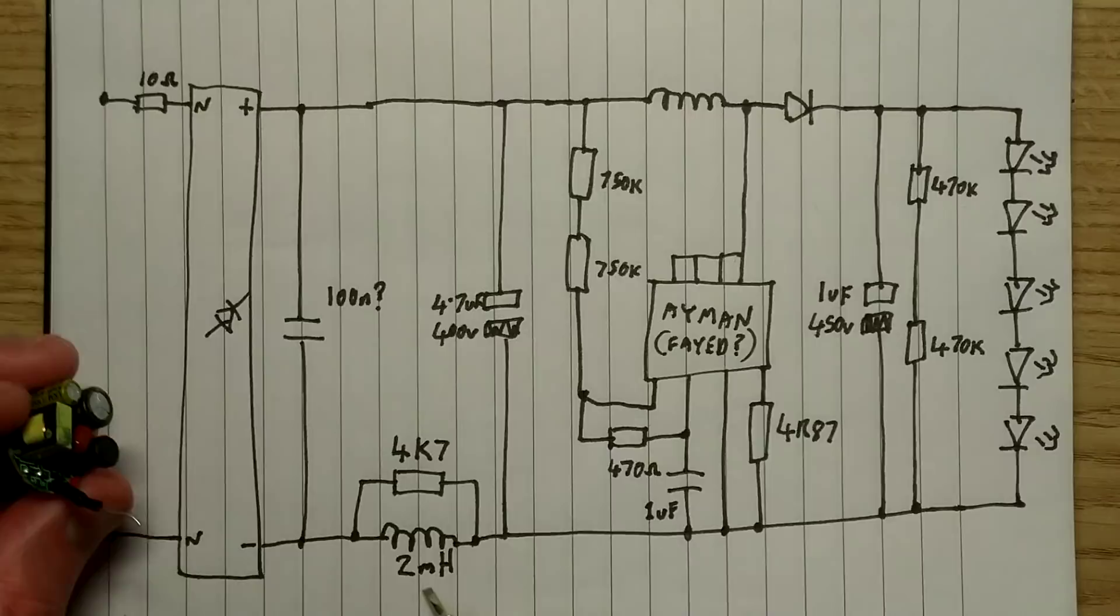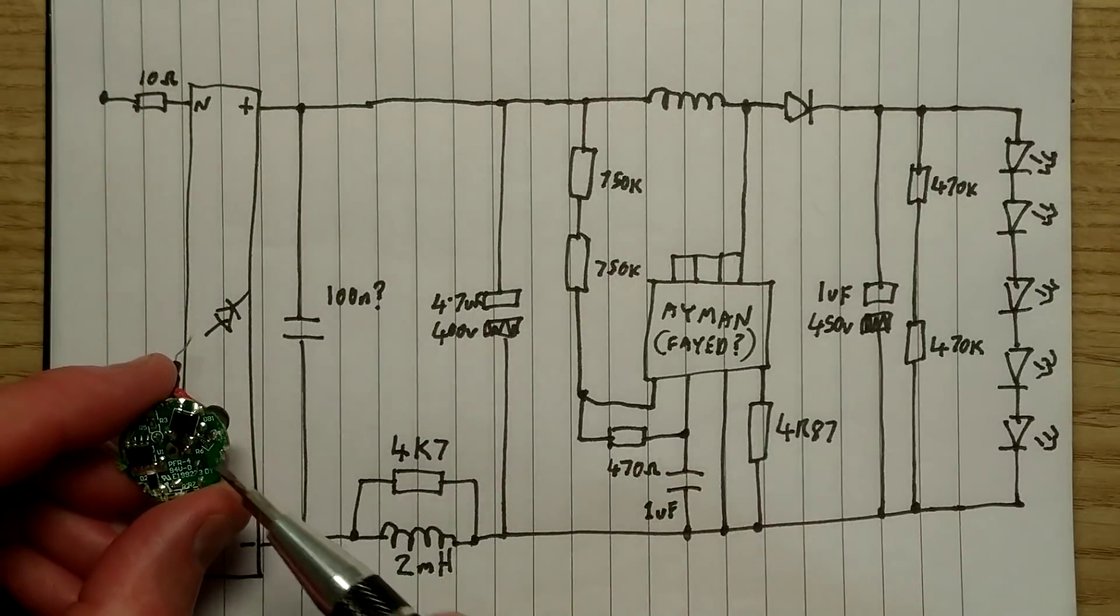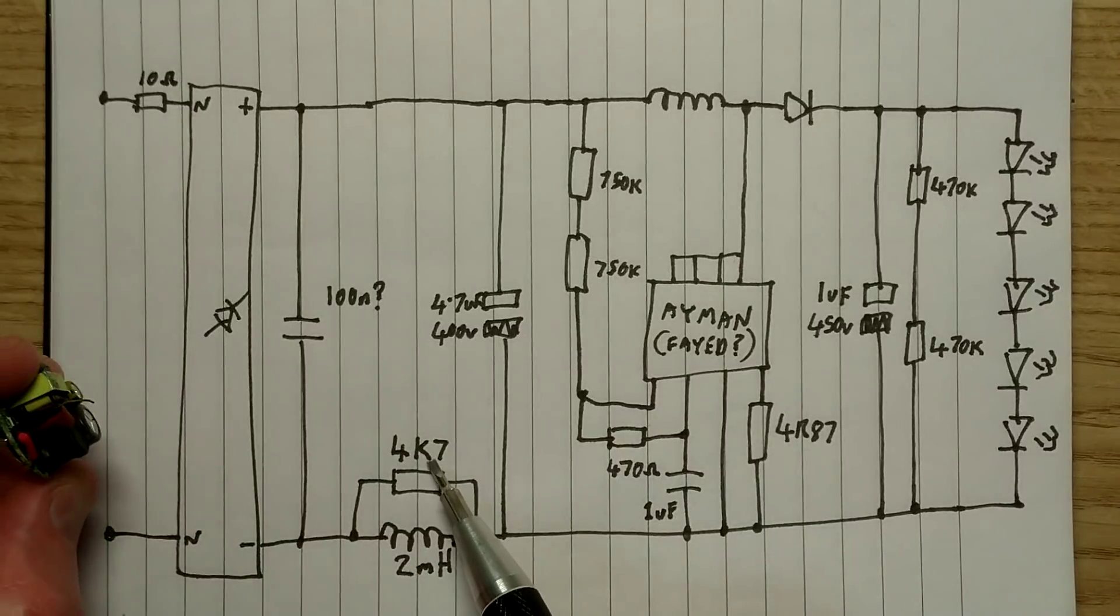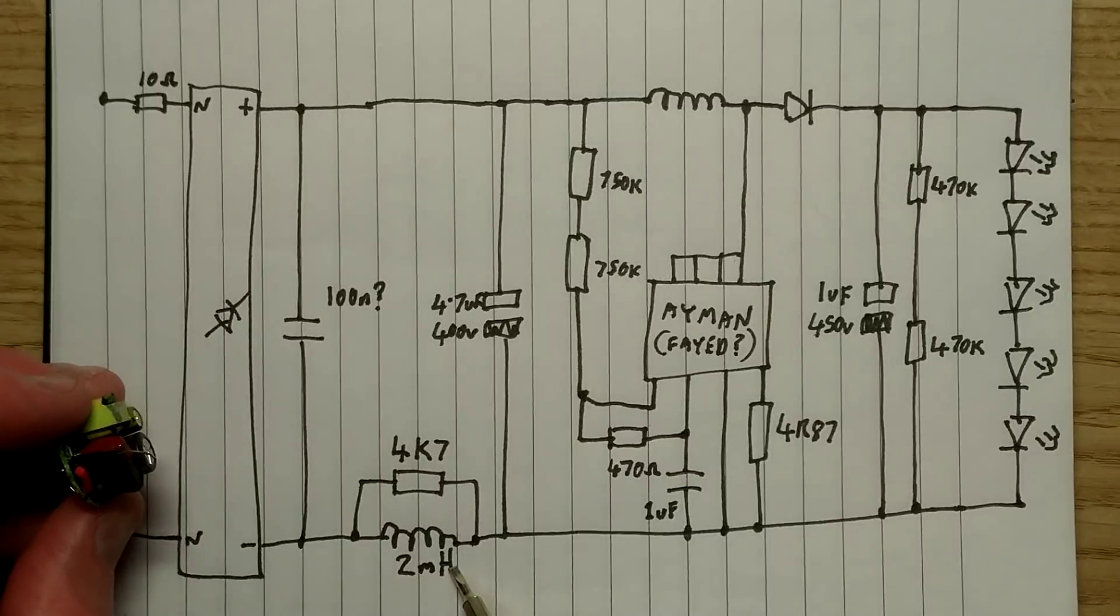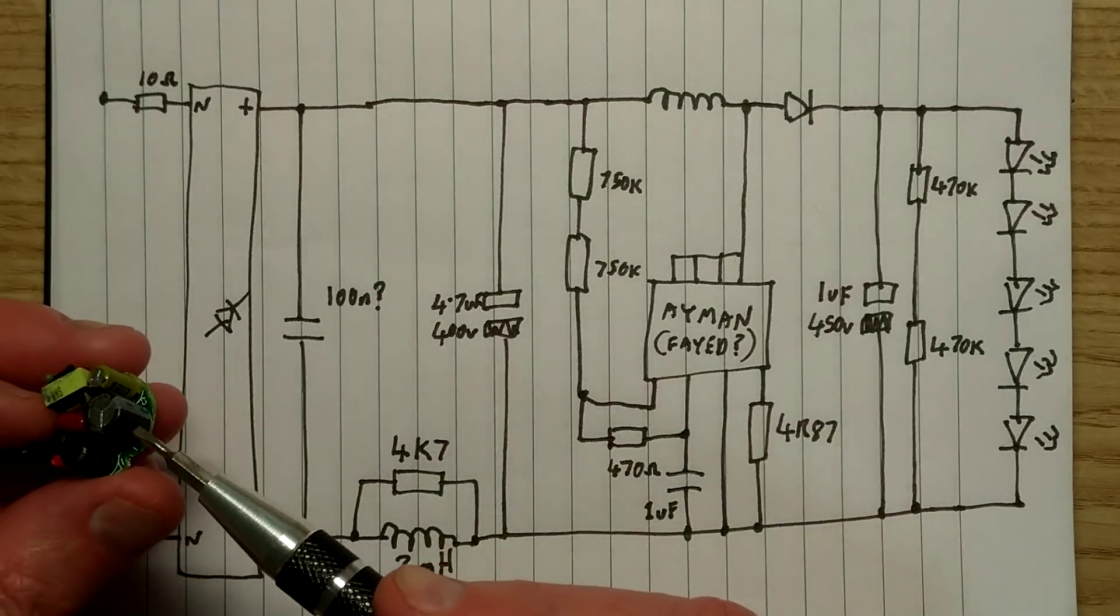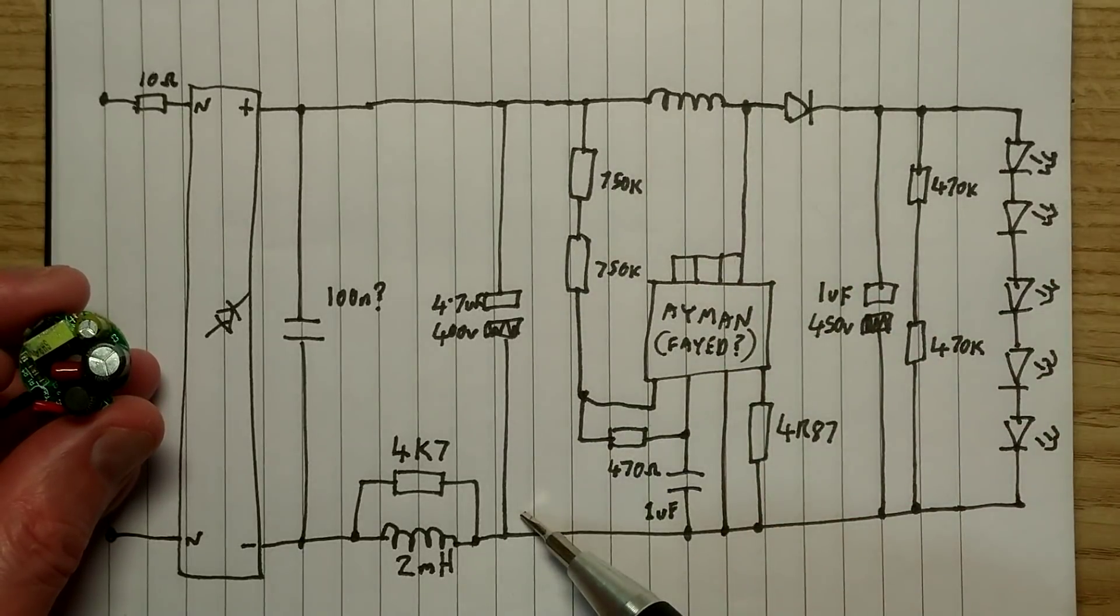But the very fuzzy blobby text in it suggests that maybe 100 nanofarad 400 volts. Then there's an inductor, two millihenries, that's this little thing down here, with a surface mount resistor across the back of it. So that's a 4k7, 4,700 ohm resistor across a two millihenry inductor. And then there's the large capacitor here, which is 4.7 microfarad 400 volts.